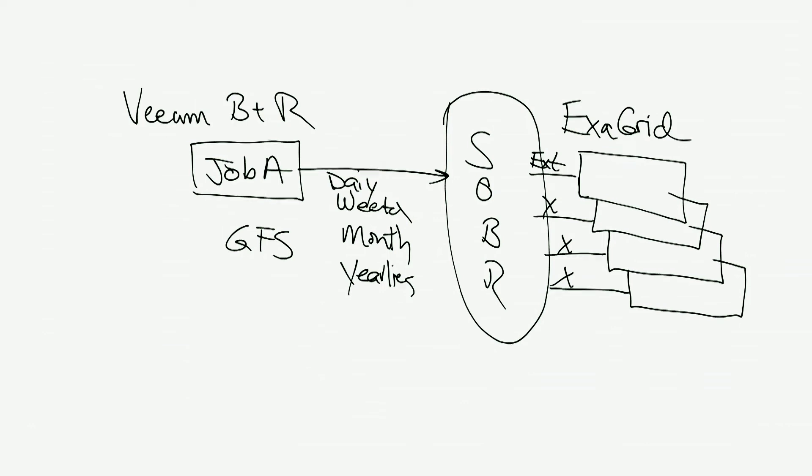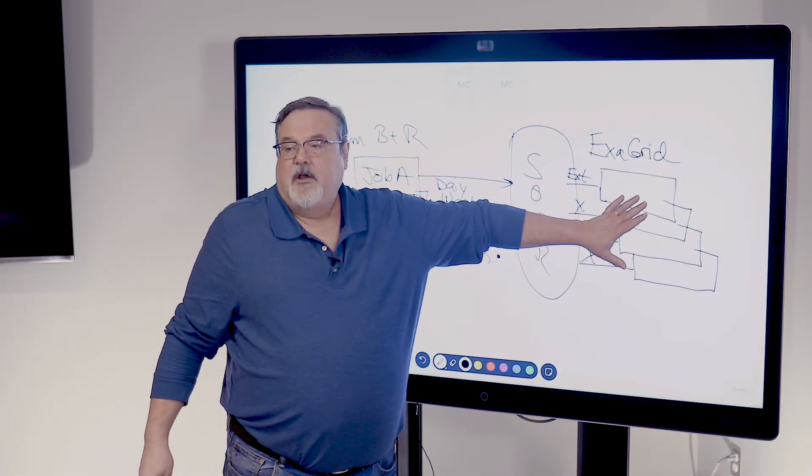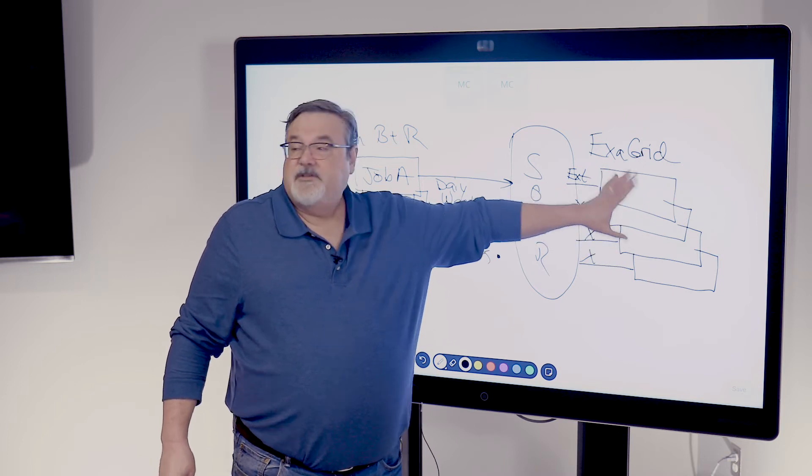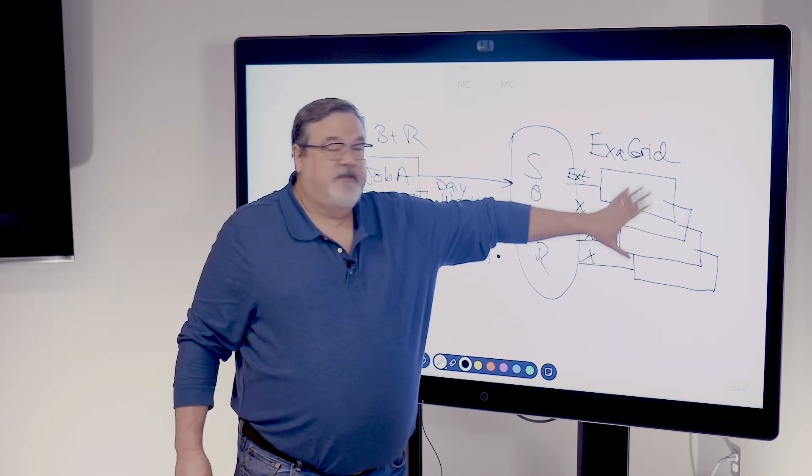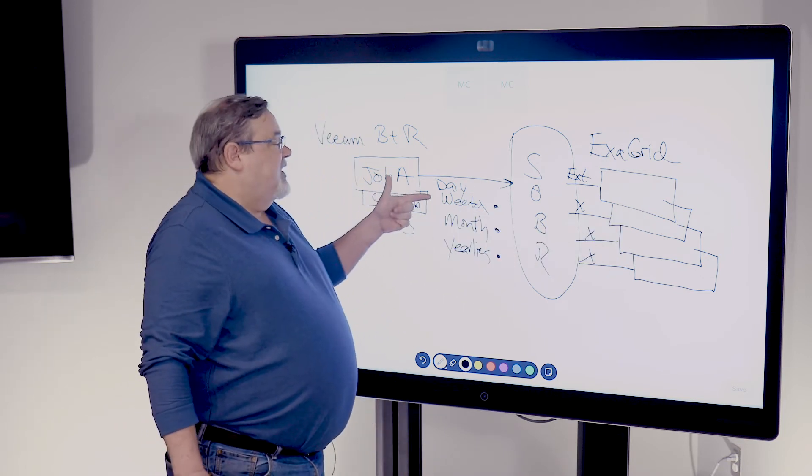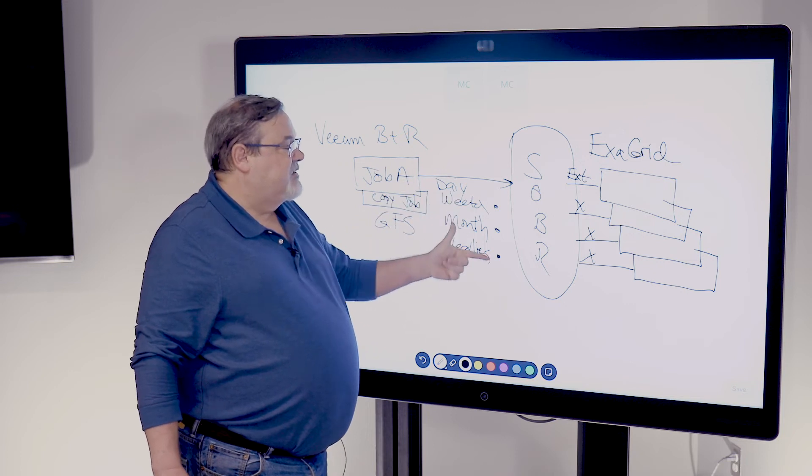In versions of Veeam prior to V10, this longer-term retention and the grandfather-father-son was accomplished by creating a copy job that was associated through this configuration of the first job, job A. And it was the actual copy job that would run and would make literally copies of the backups at the key points in order to give you weeklies and monthlies and yearlies. Making a whole copy of the backup really didn't consume any additional storage on the Exegrid because of the deduplication. Since it was a copy, that took very little capacity here. But it was an operation that had to be scheduled or that Veeam had to manage that took time to complete.